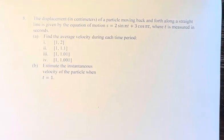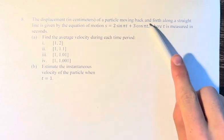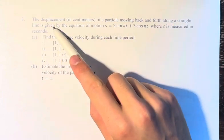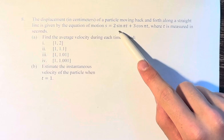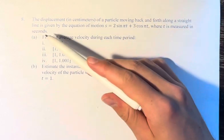Hello, and welcome back to another video. In this problem, we're told that the displacement in centimeters of a particle moving back and forth along a straight line is given by the equation of motion s = 2sin(πt) + 3cos(πt), where t is measured in seconds.